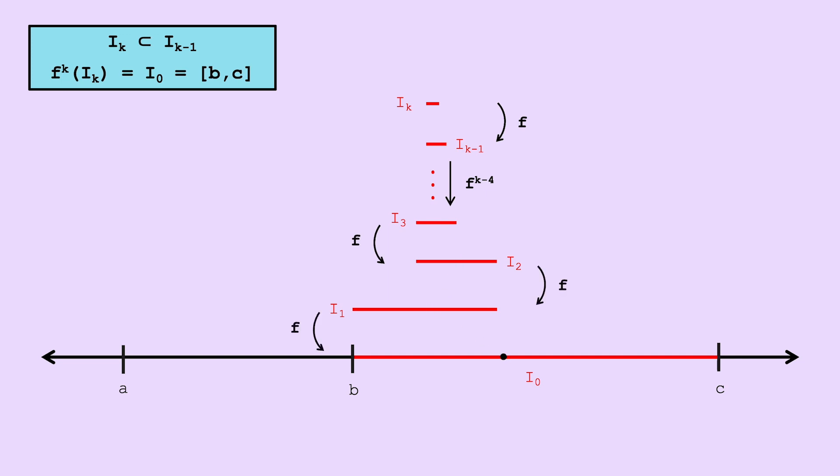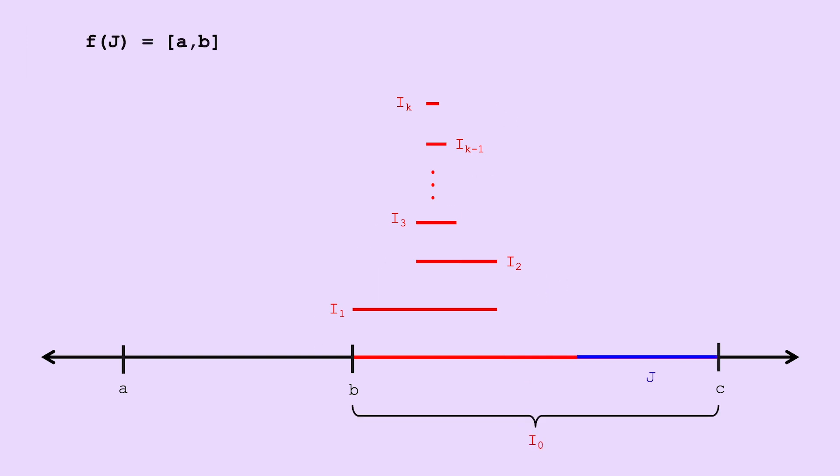Then because f of i0 contains the interval ab, by the second corollary again, there's some interval j in bc, such that f of j is equal to ab.